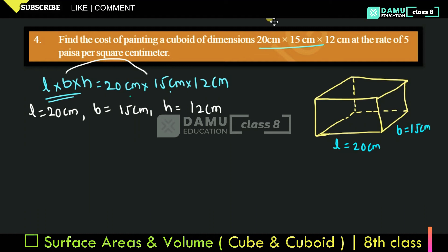How many faces are there? You can count: front is 1, back is 2, right is 3, left is 4, top is 5, then bottom is 6 — so 6 faces are there. We need to find the cost of painting of the cuboid, which means we need the total surface area at the rate of 5 paisa per square centimeter.